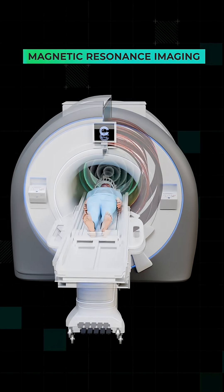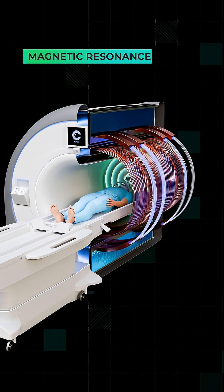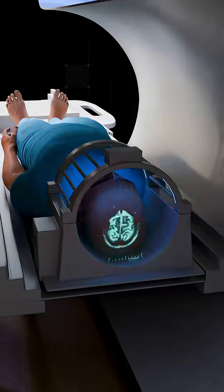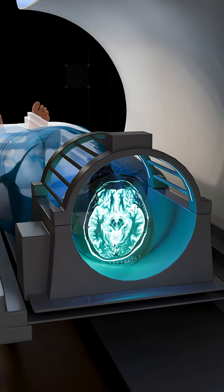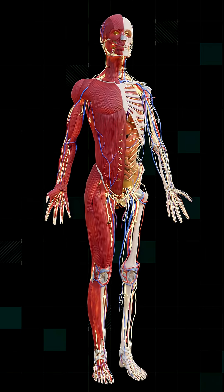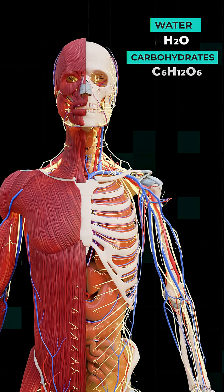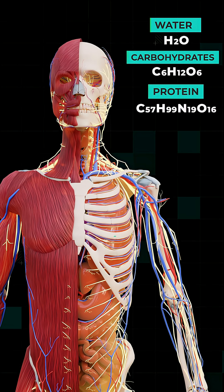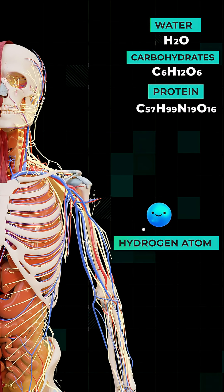An MRI machine is one of the most complicated and marvelous pieces of engineering. It can give you a detailed 3D image of your body's insides. Our body is mostly made of water, carbohydrates, and proteins, all of which are rich in hydrogen atoms.